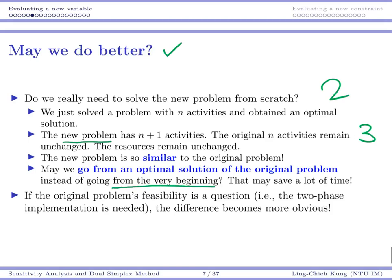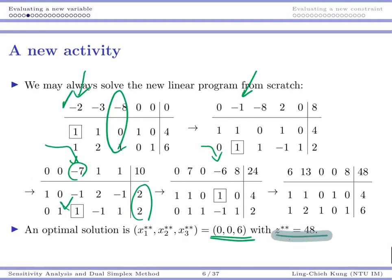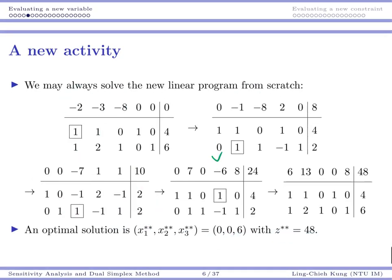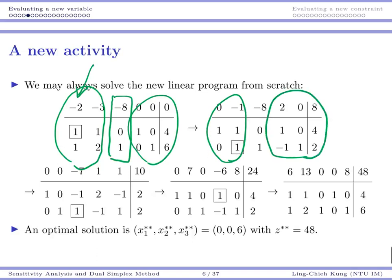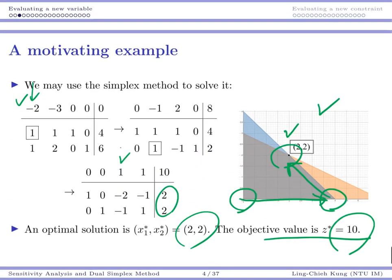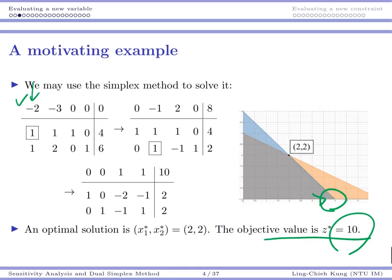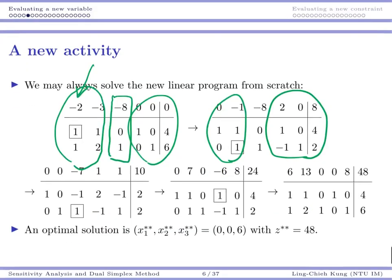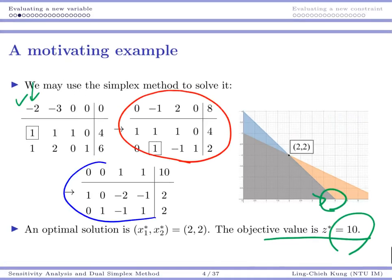If you take a look at our previous iterations, you may see more concretely why this may help. When we add the third activity, the others are just the same. When you enter x1, basically those things I circled are just the same as what we have in your second tableau when you do not have product 3. After you enter x2, those things I circled are also the same as your optimal tableau when you do not have product 3.